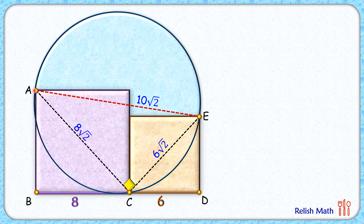By the inscribed angle theorem, since AE subtends a 90-degree angle at the circumference, AE must be the diameter of the circle. Therefore, the radius is half of that — 5√2 centimeters. That's our answer! I hope you enjoyed the solution. I will see you in the next video — take care, bye bye!